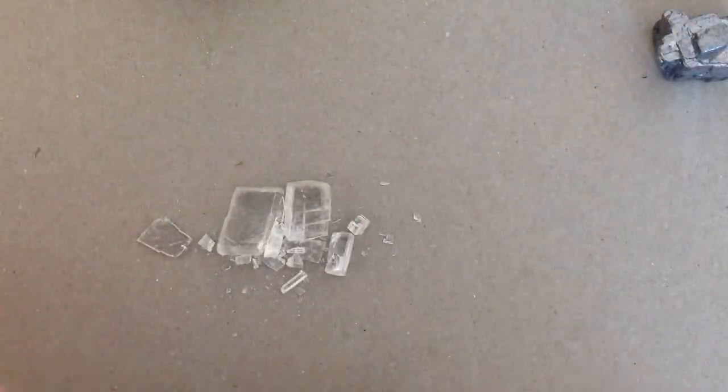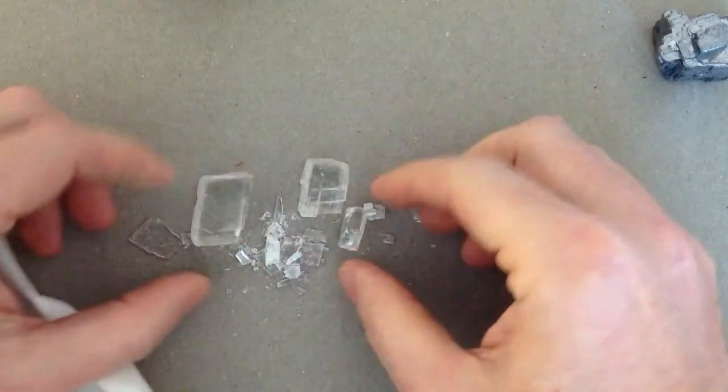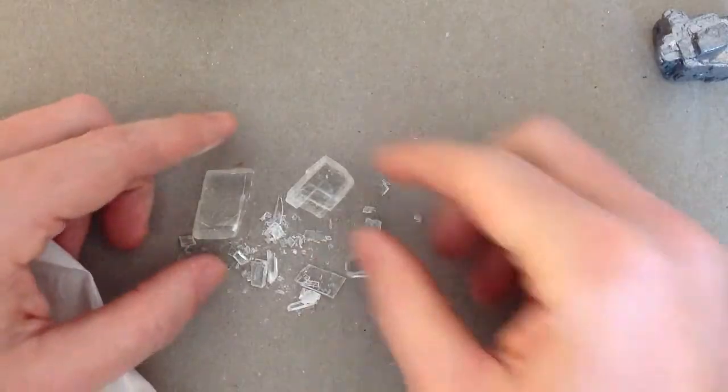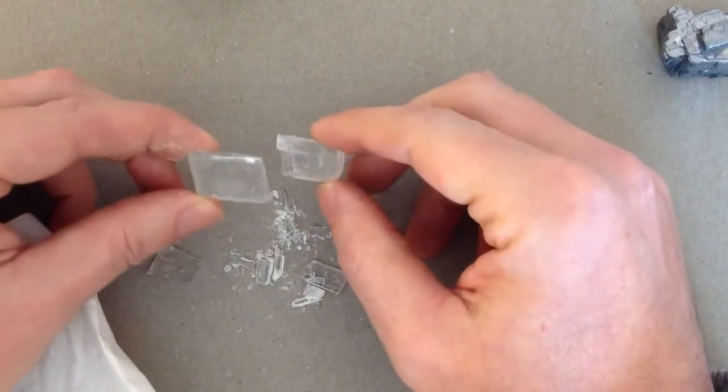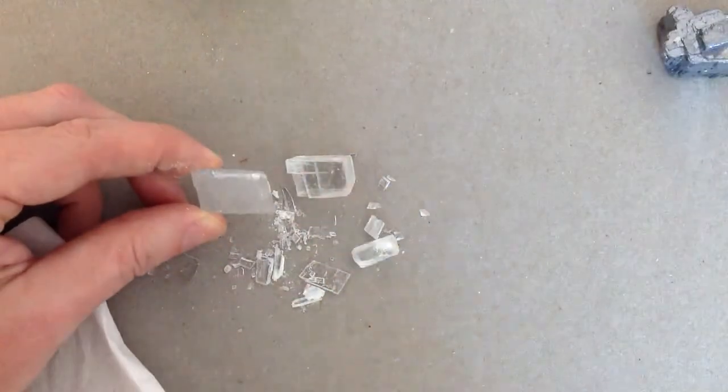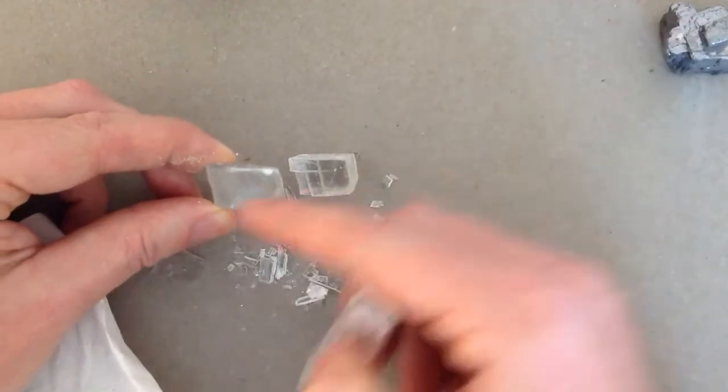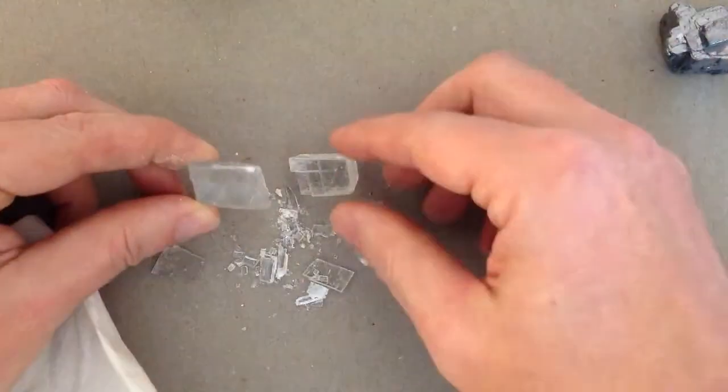you'll see that the smaller pieces that have broken apart look identical to the original sample. Look at these pieces. They look identical to the original sample. So there is another original sample of calcite. Look at the smaller pieces that broke apart.